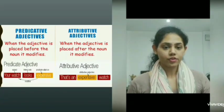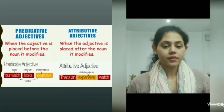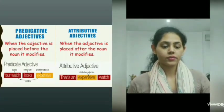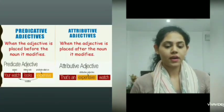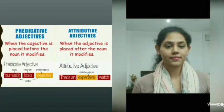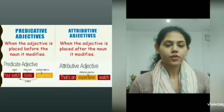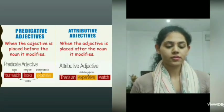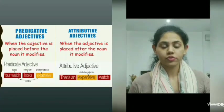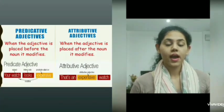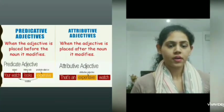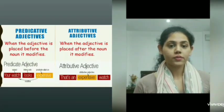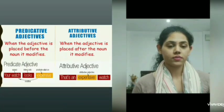The first type is the predicative adjective. When the adjective is placed after the noun it modifies, we have a sentence like 'your watch looks expensive.' Here, 'your watch' is the subject, and 'expensive' tells about the watch, so it becomes the adjective. Since the adjective came after the subject, that is why we call it a predicative adjective.